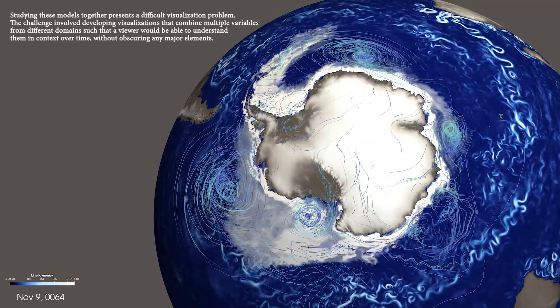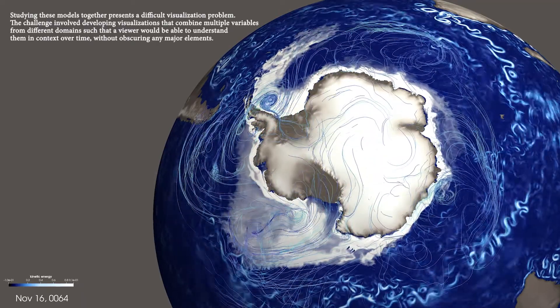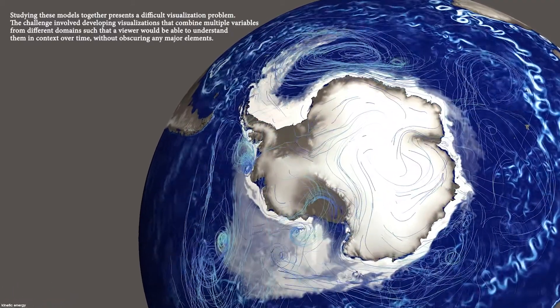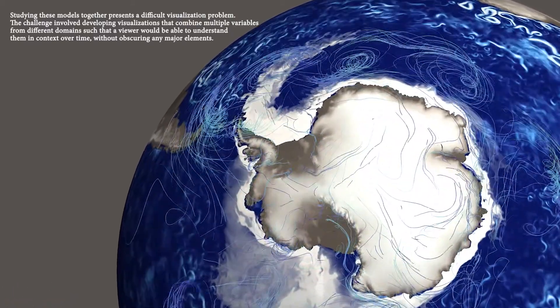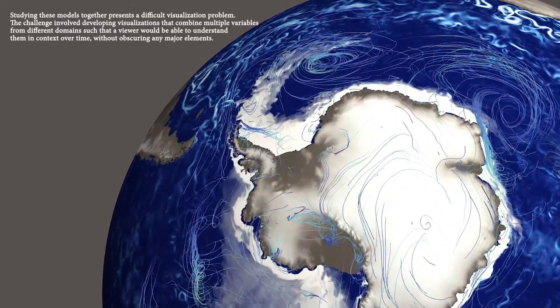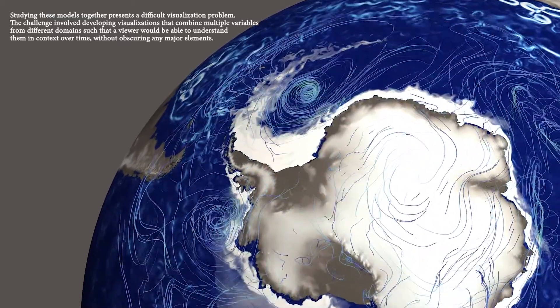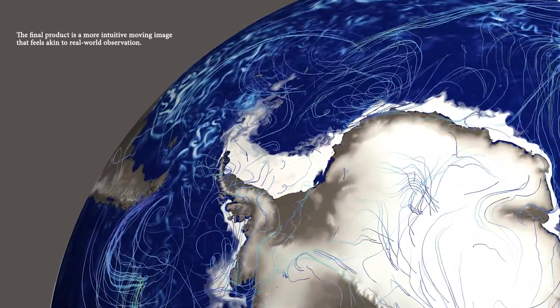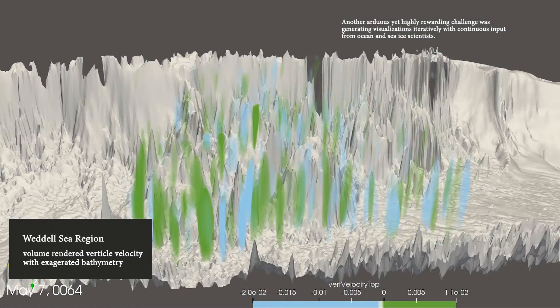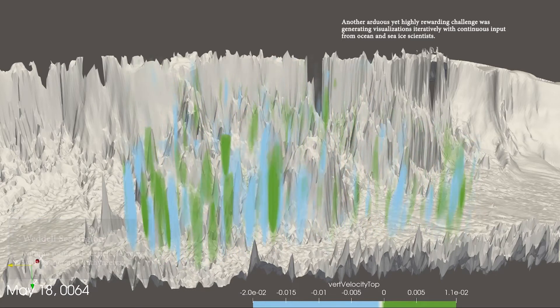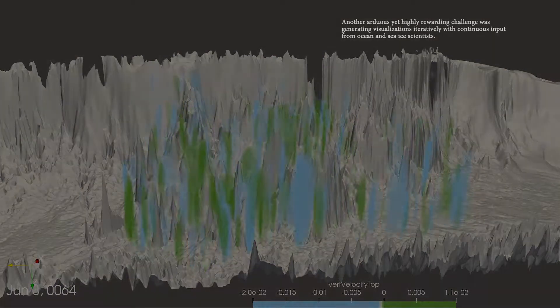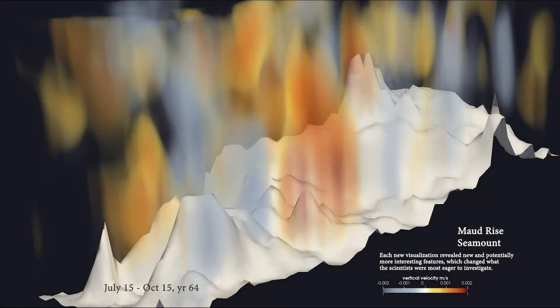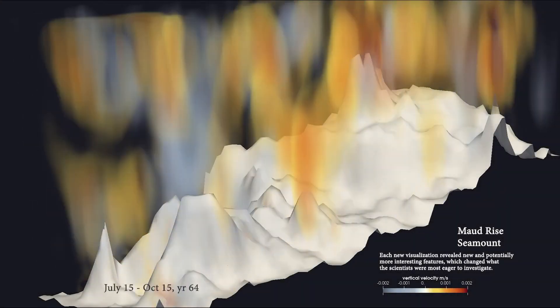Studying these models together presents a difficult visualization problem. The challenge involved developing visualizations that combine multiple variables from different domains such that a viewer would be able to understand them in context over time, without obscuring any major elements. The final product is a more intuitive, moving image that feels akin to real-world observation. Another arduous yet highly rewarding challenge was generating visualizations iteratively with continuous input from ocean and sea ice scientists. Each new visualization revealed new and potentially more interesting features, which changed what the scientists were most eager to investigate.